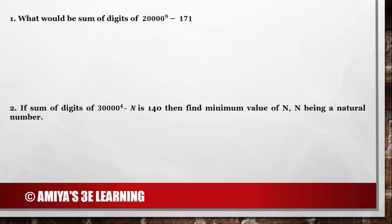Now let's solve our original questions. We have 1, 2, 3, 4 — that is 4 into 9 into 9 gives the number of nines with their summation, that is 36 nines into 9. Minus: instead of working on 171, I will work on 170, that is 8. 2 raised to power 9 is 512, so we work on 511, that is 7. And this is our answer, which is nothing but 323. I hope this is clear.